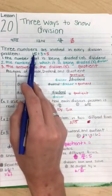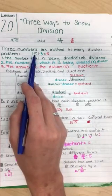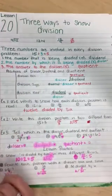So you have the dividend, divisor, and quotient.